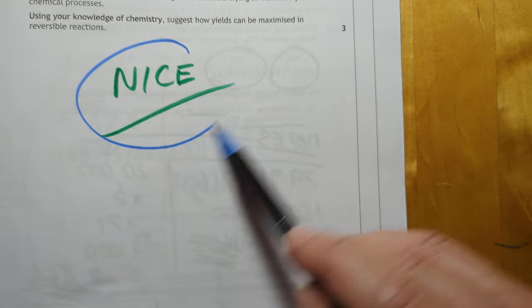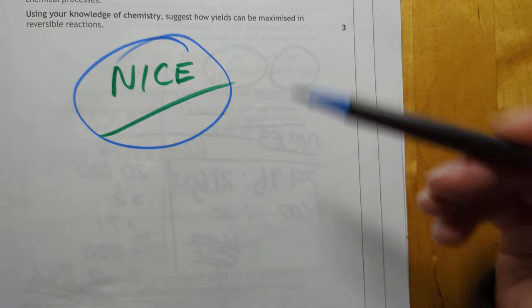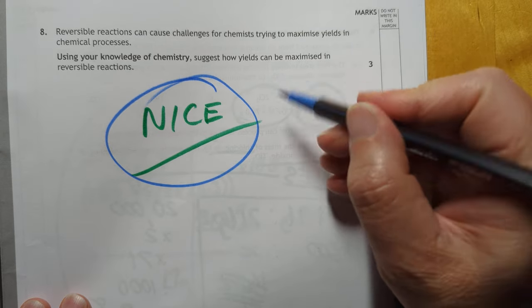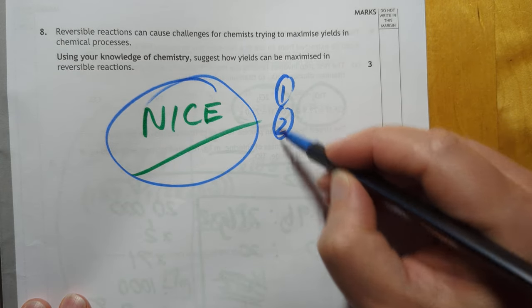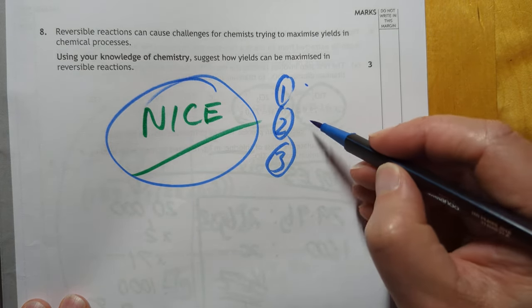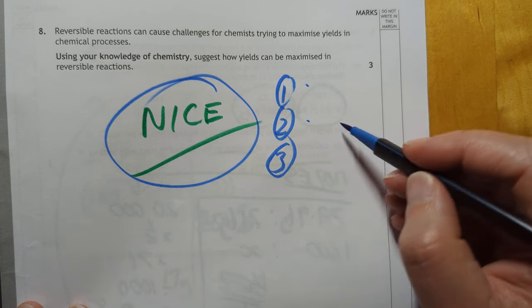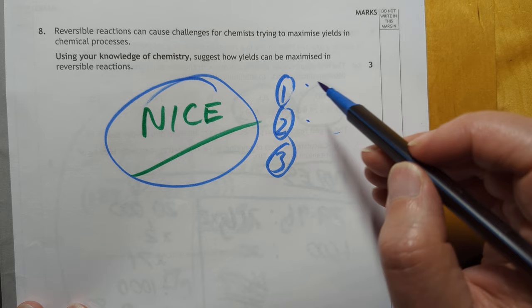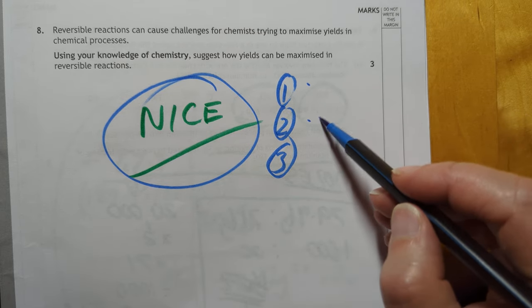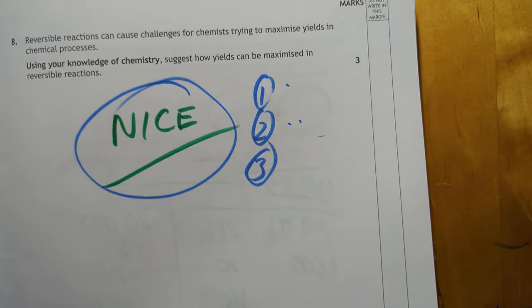Another nice open ender. Talk about equilibrium and how you're one two three change the pressure change the temperature change, add or remove a reactant. If you fancy it you can throw a catalyst in the fact that it won't change the yield so it's a nice question I like this one. Happy days.